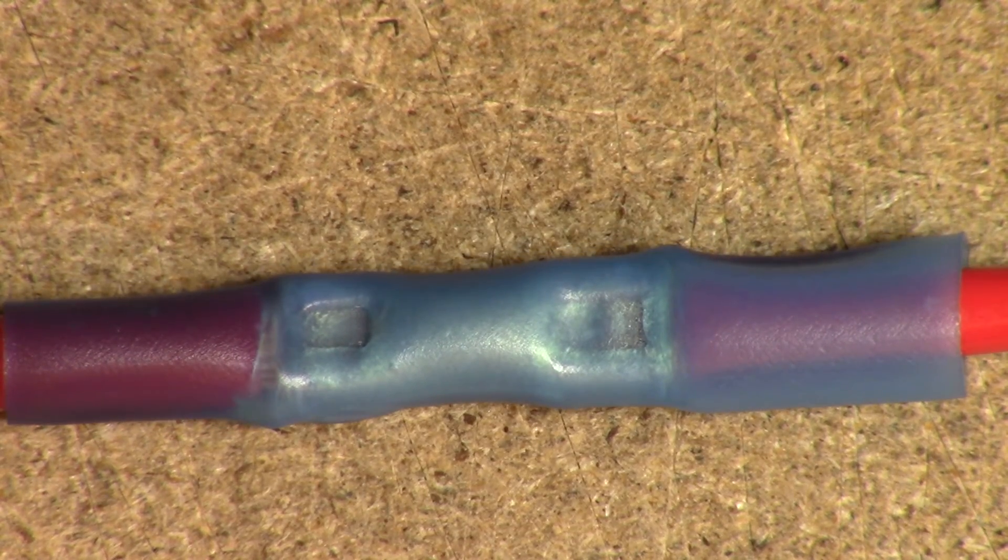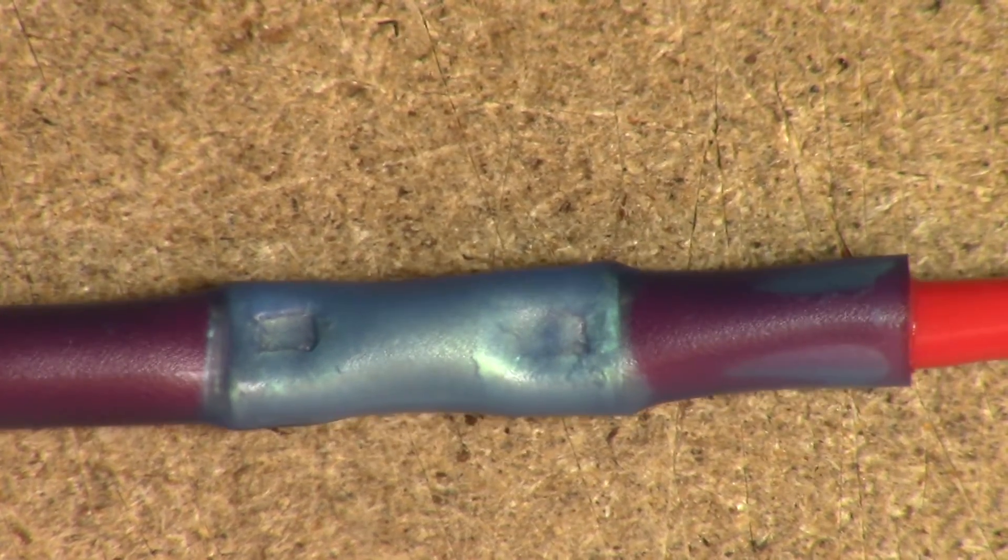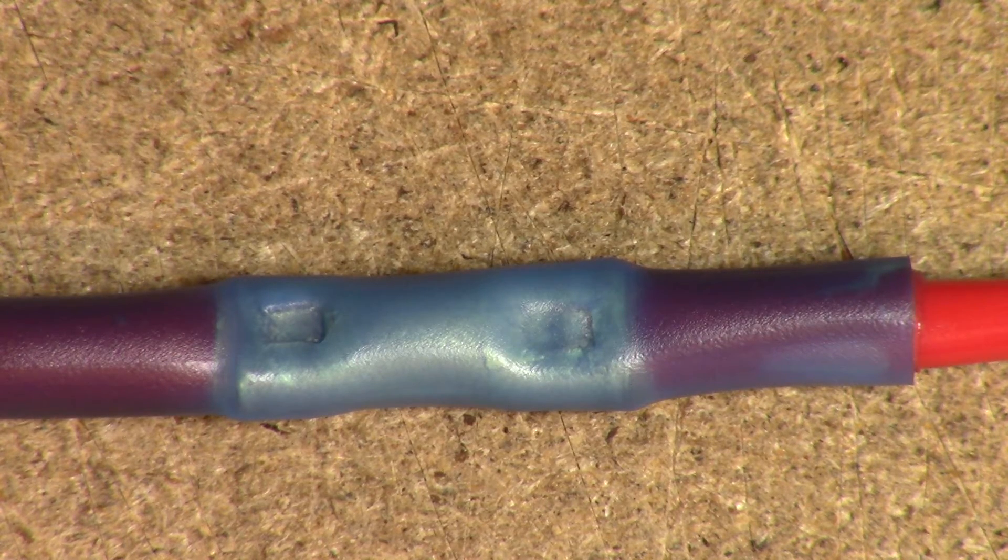As seen before, the heat shrink sealing begins to shrink and the glue slowly melts, filling those areas and creating that darker color that we saw earlier.